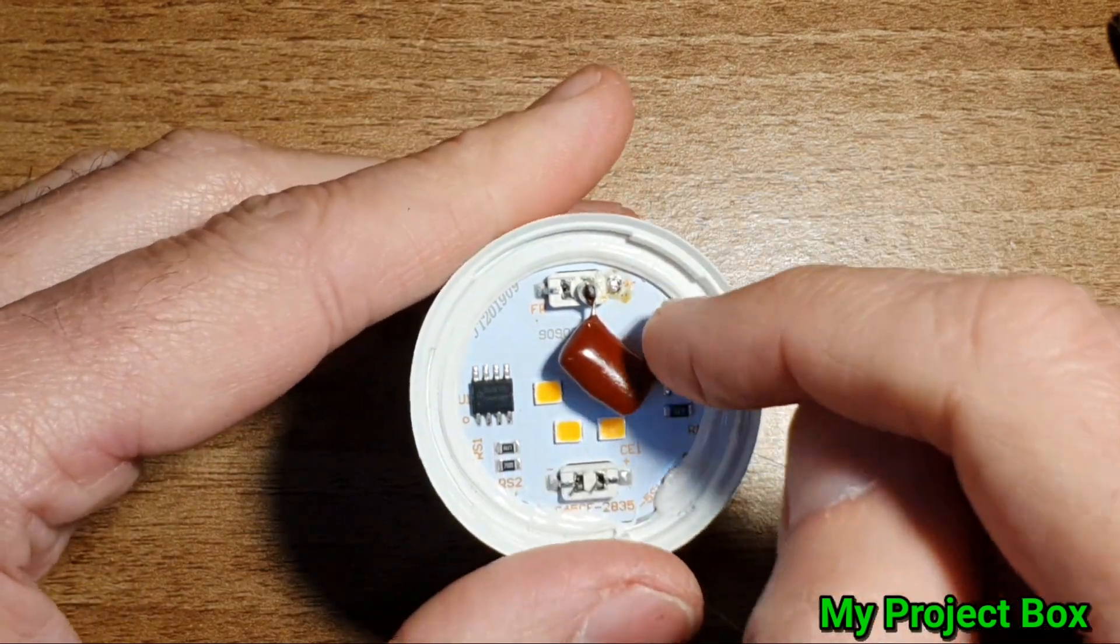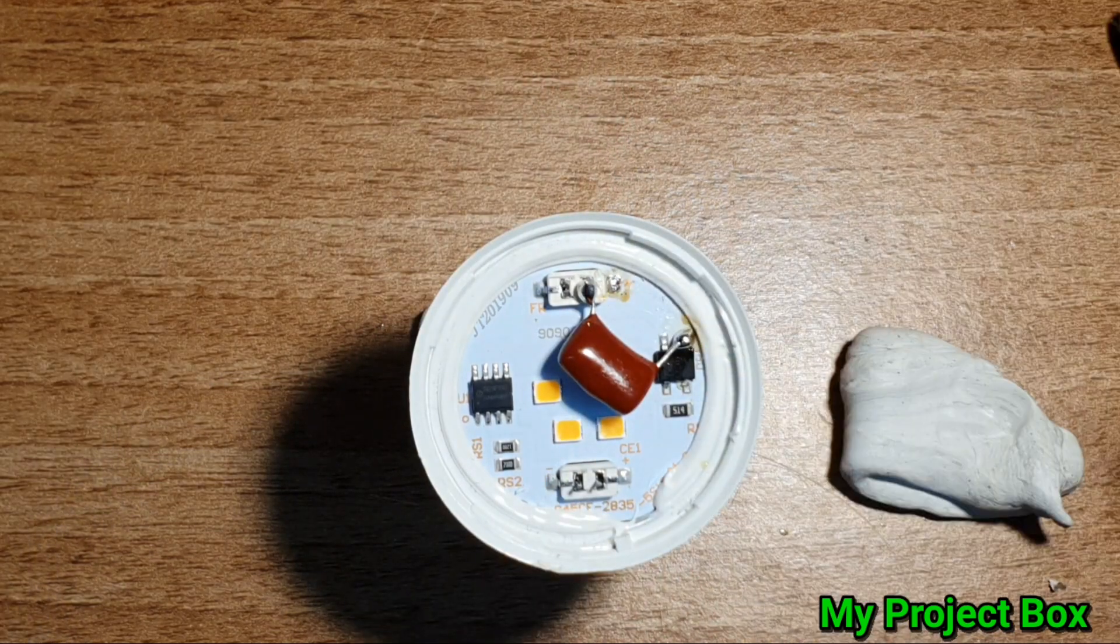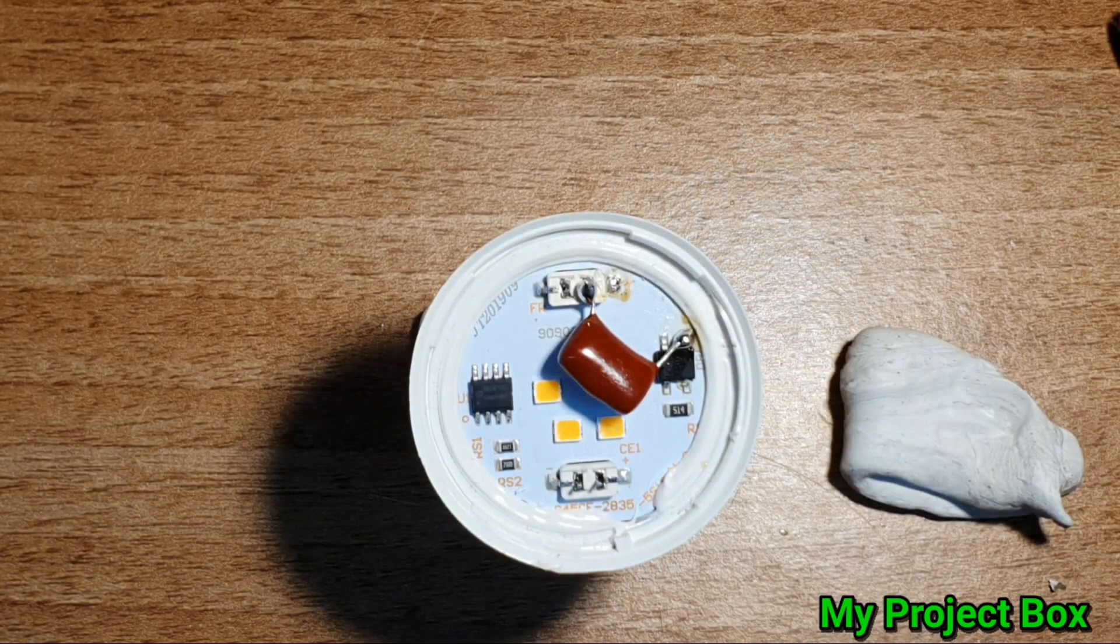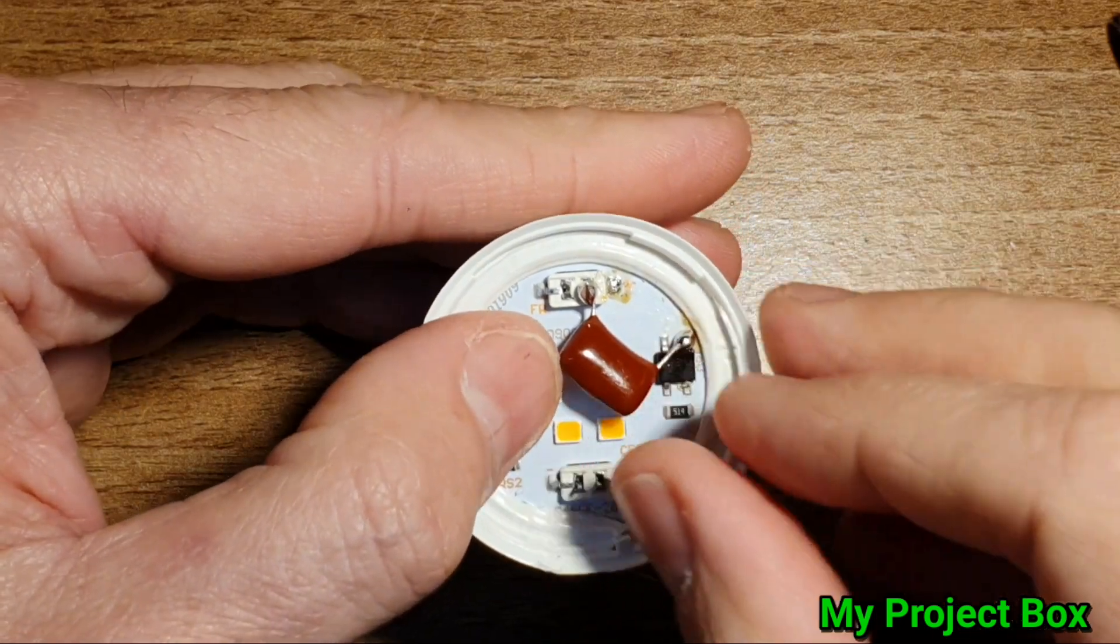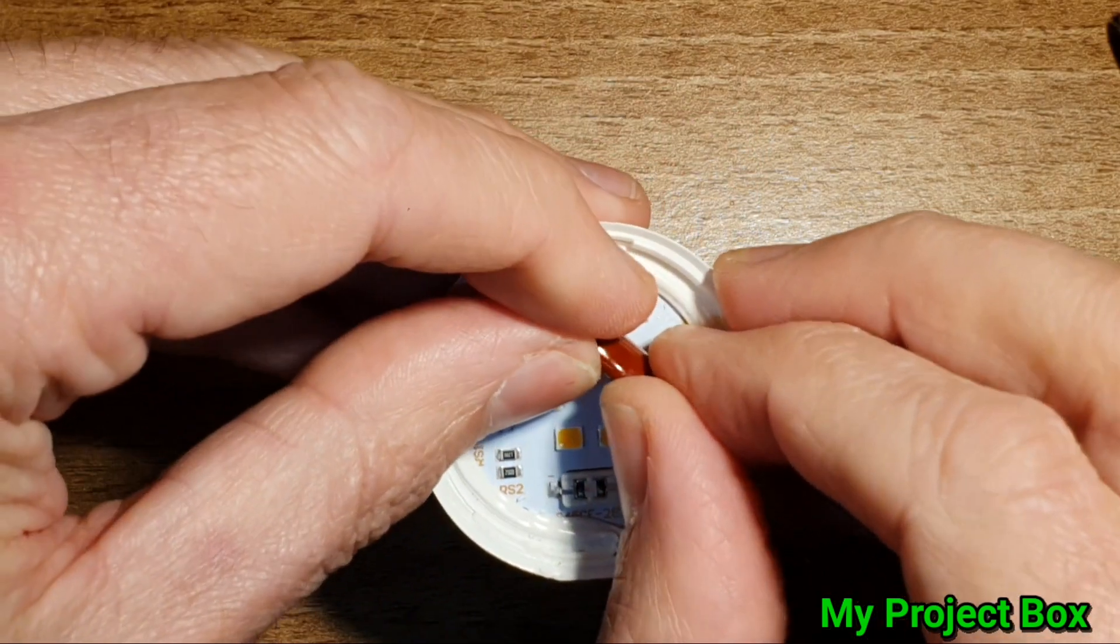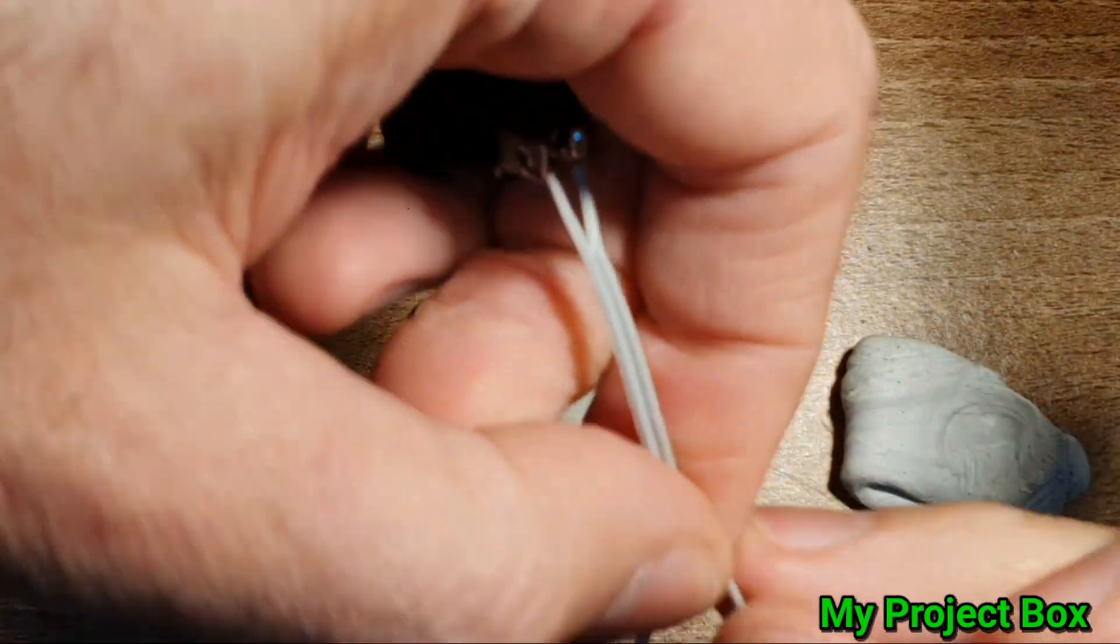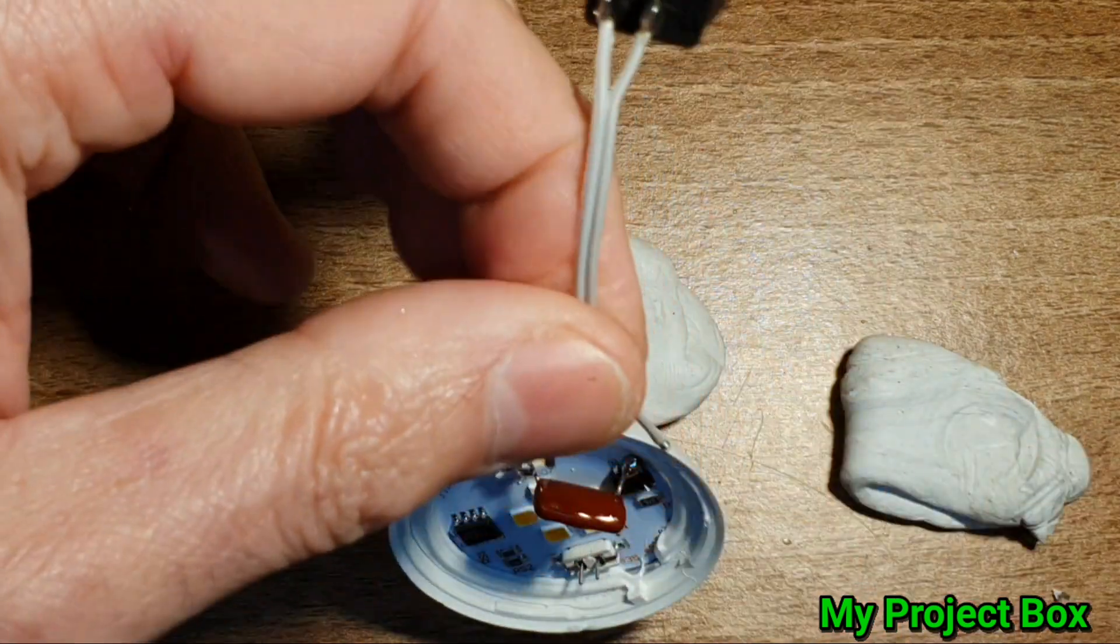But what we want to do is we now want two wires connected across there to the switch. I think what we can do is bend this up so that it doesn't interfere with the light coming out from the LEDs too much. Take the switch across it quickly.